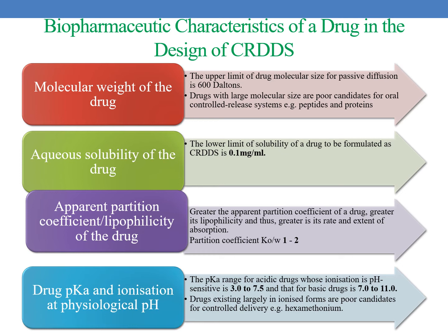The next one is apparent partition coefficient or lipophilicity of the drug. Greater the apparent partition coefficient, greater its lipophilicity and greater its rate and extent of absorption. Usually for controlled release drug delivery systems, the partition coefficient KOW must be 1 to 2. The next characteristic is drugs' pKa and ionization at physiological pH. The pKa range for acidic drugs is 3 to 7.5 and for basic drugs is 7 to 11. Drugs existing largely in ionized forms are poor candidates for controlled drug delivery system.